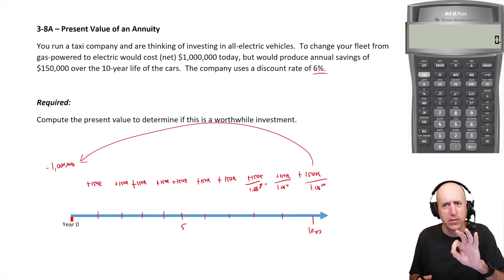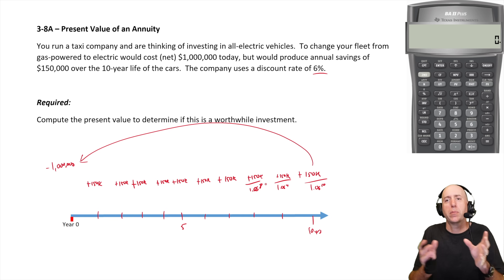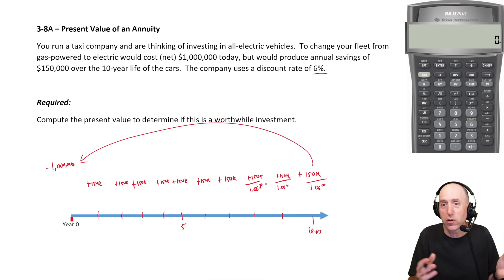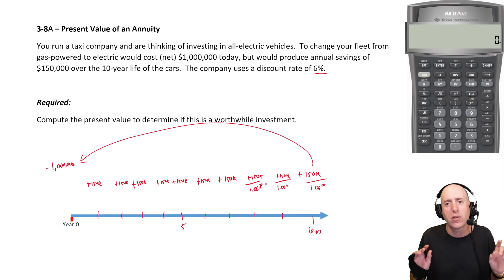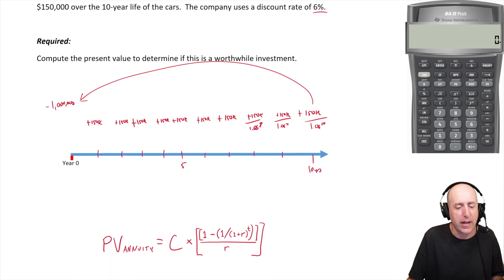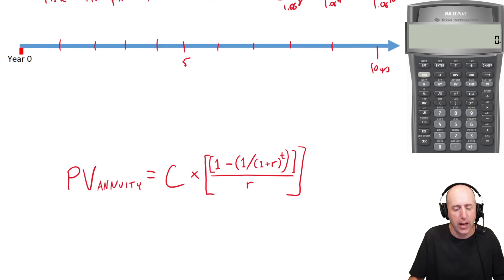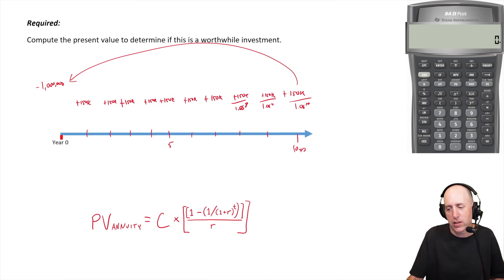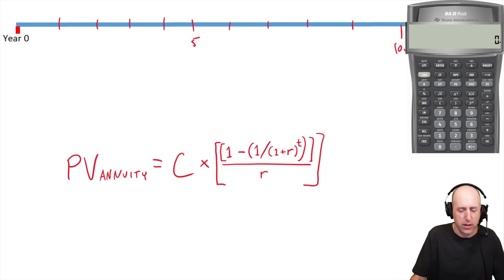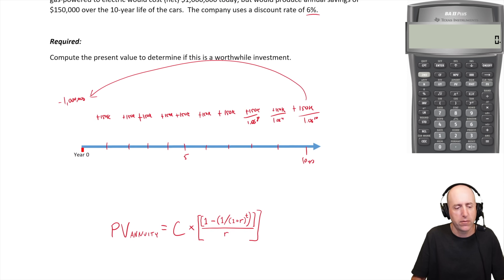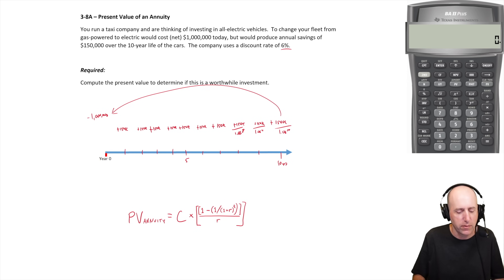There are really three ways to solve this and I'm going to go over two of them. The way I'm not going to cover is present value tables, which your professor might use. The first way we will solve it is formulaically using the present value formula. The second way is with the financial calculator. So of the three ways — no tables — we'll do the formula and the calculator in this video.